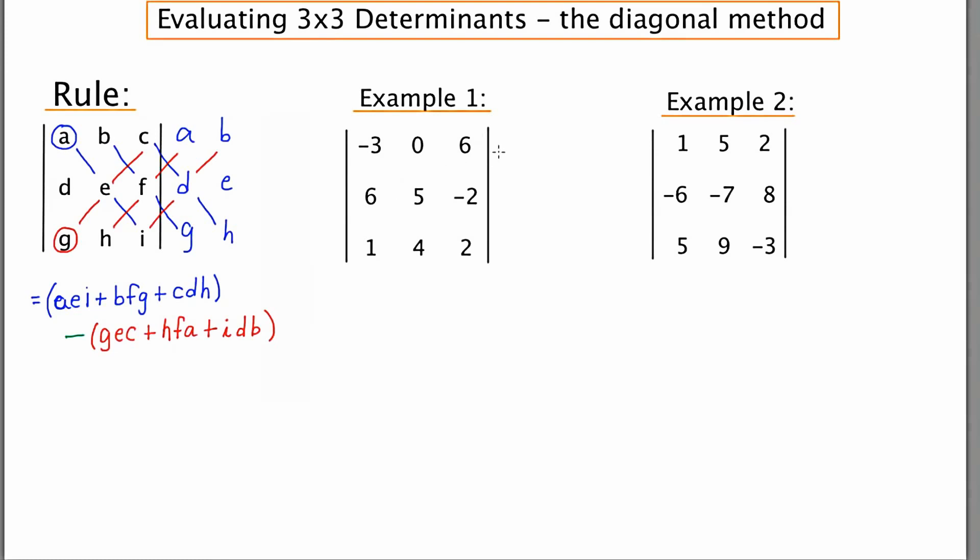In example one, I'll start by rewriting the first two columns. Again, maintaining that spacing. Negative three, six, one, and then zero, five, four.